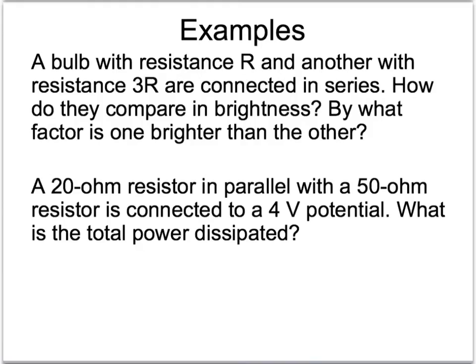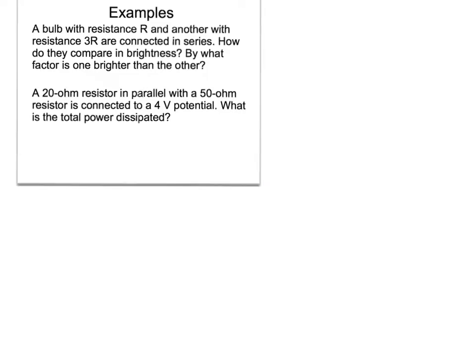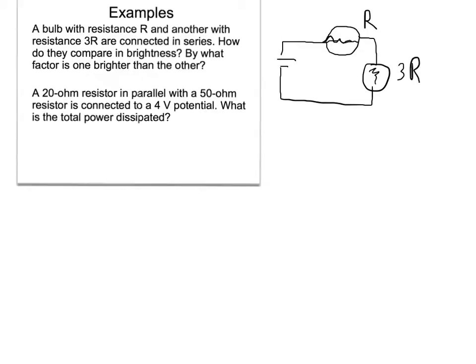Two examples to start us off — one really conceptual, one mathematical. First: a bulb with resistance R and another with resistance 3R are connected in series. How do they compare in brightness, and by what factor is one brighter than the other? For this first question, we're going to imagine two light bulbs connected to a power source in series. One is R and the other is 3R.